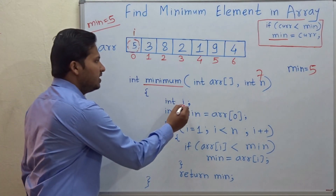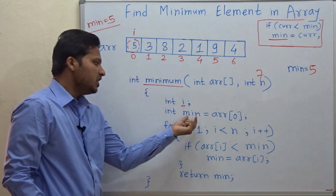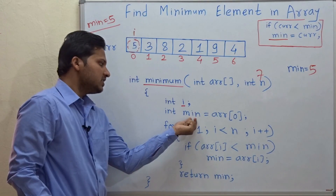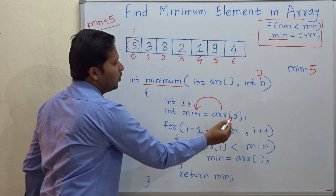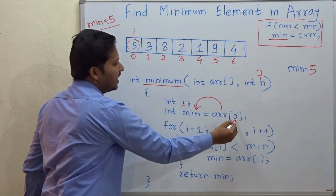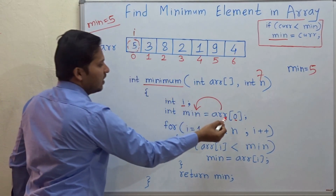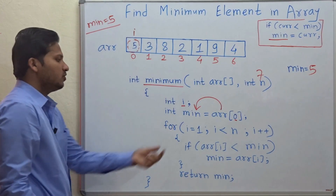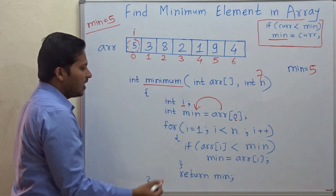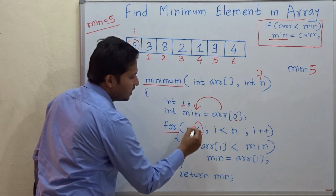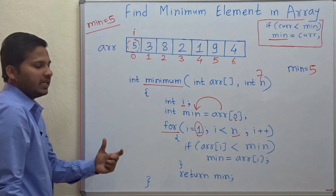i is the variable declared to trace this array, and the minimum variable is declared. The first value in the array — that is the 0th index of the array — is assigned to the minimum variable. Now let's start the for loop from the first index to the last index, that is n.